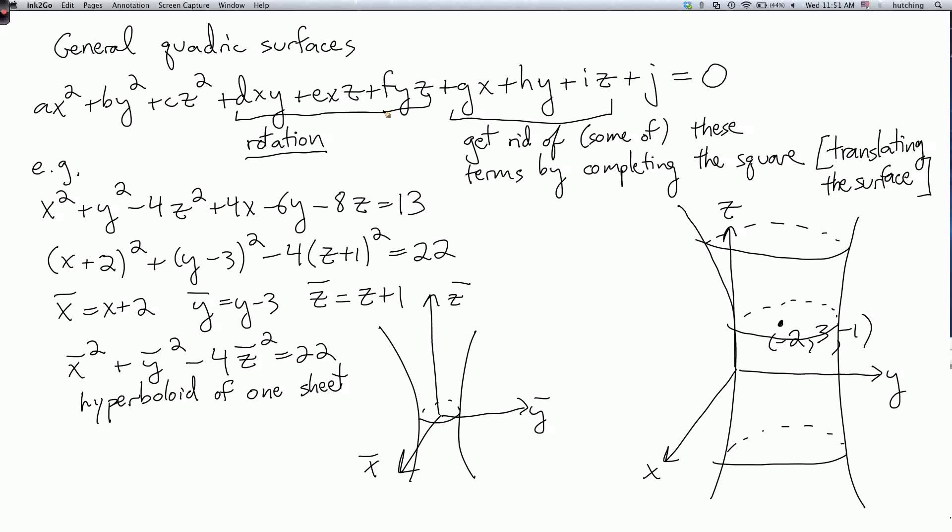For example, if you wanted a hyperboloid where its axis, so to speak, was not vertical but was pointing at a slant, then you would have some of these xy, xz, and yz terms.